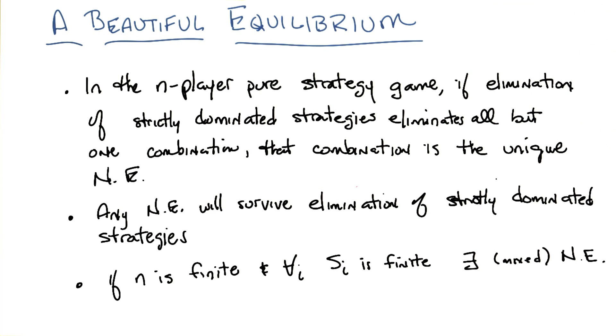And that makes sense because if they're strictly dominated, then if you ever end up there, you would want to leave. And therefore it can't be a Nash equilibrium. So those two things sort of make sense, I think.